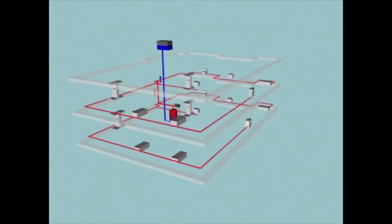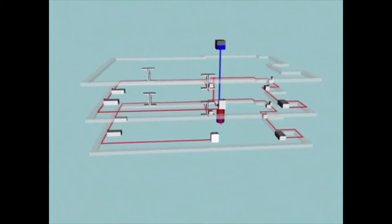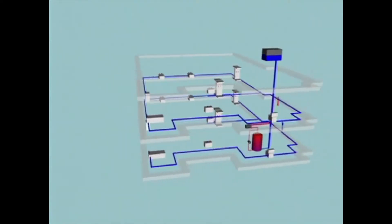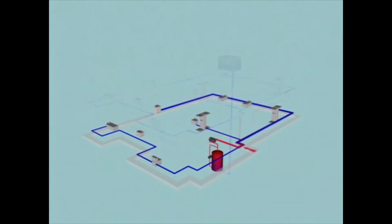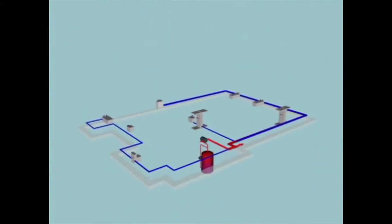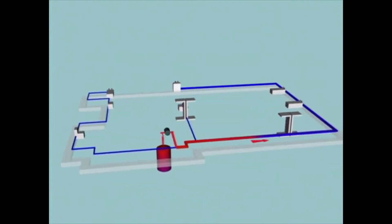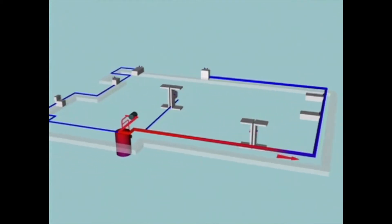With the outlets closed, the water left standing in the pipework will cool down until it reaches the ambient temperature. We'll simplify the diagram by looking at just one floor. When a tap or other outlet in the system is opened, the hot water flows from the calorifier under the pressure of gravity.